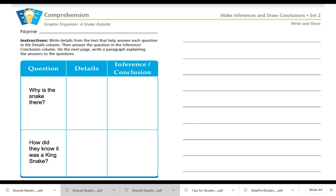So my question was, why is the snake there? And I also was curious on how did they know it was a king snake? I want you to take a few minutes. Go back to the passage in this presentation or the PDF version. Re-read and see if you can identify some details, some clues that help you infer and draw a conclusion to my questions. Go ahead and take a few minutes now.